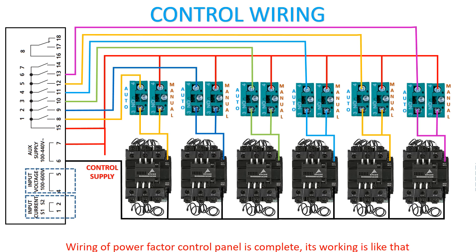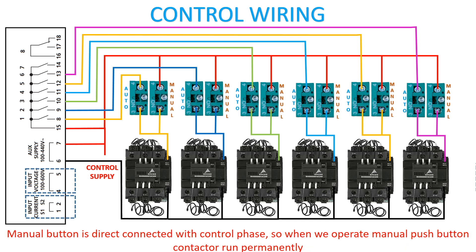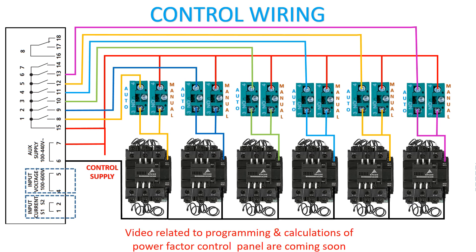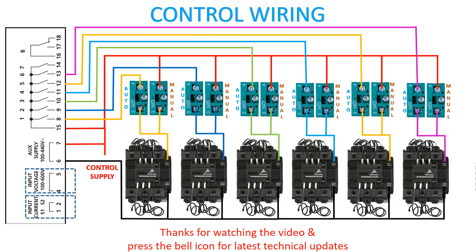Its working is like this: the manual button is directly connected with the control phase, so when we operate the manual push button, the contactor runs permanently. When we run the contactor through the auto button, it runs automatically with the help of APFC. Videos related to programming and calculations of power factor control panel are coming soon. Thanks for watching the video and press the bell icon for latest technical updates.